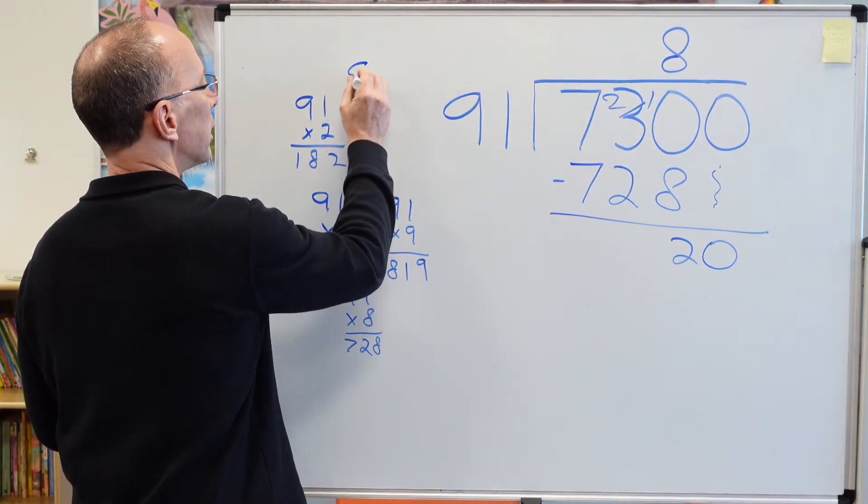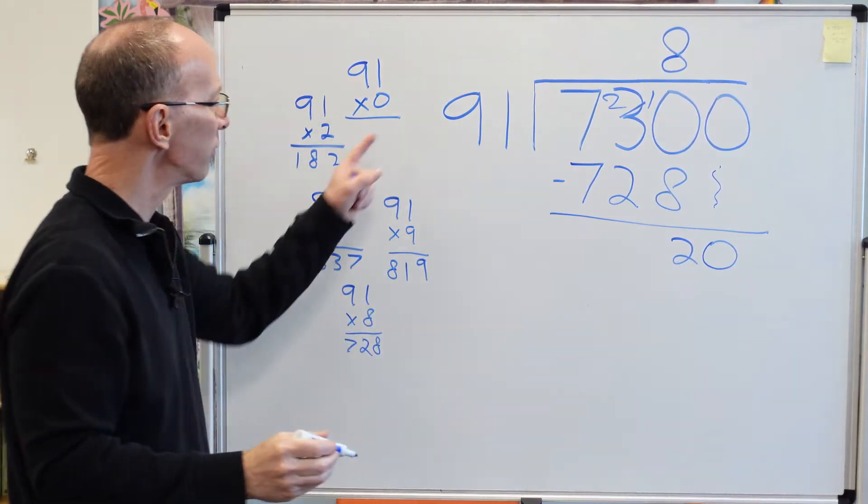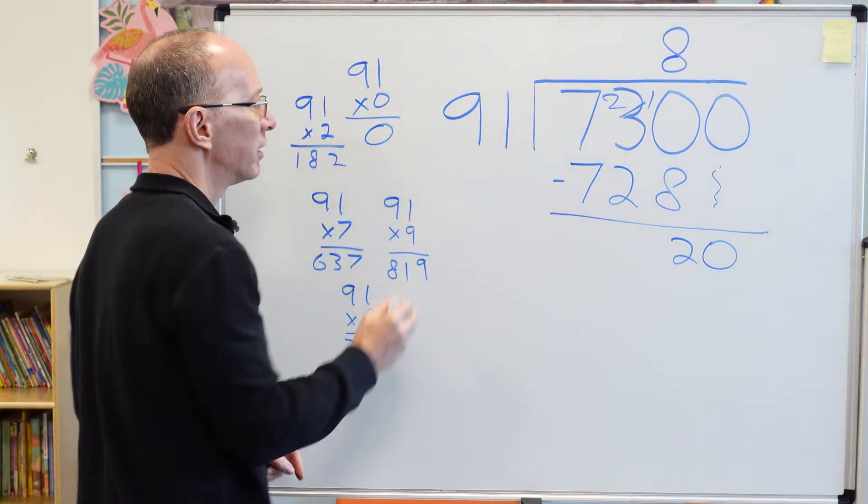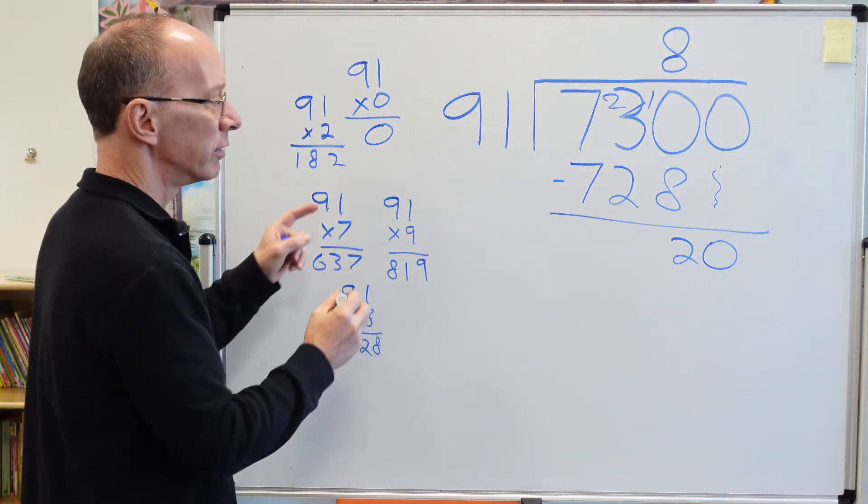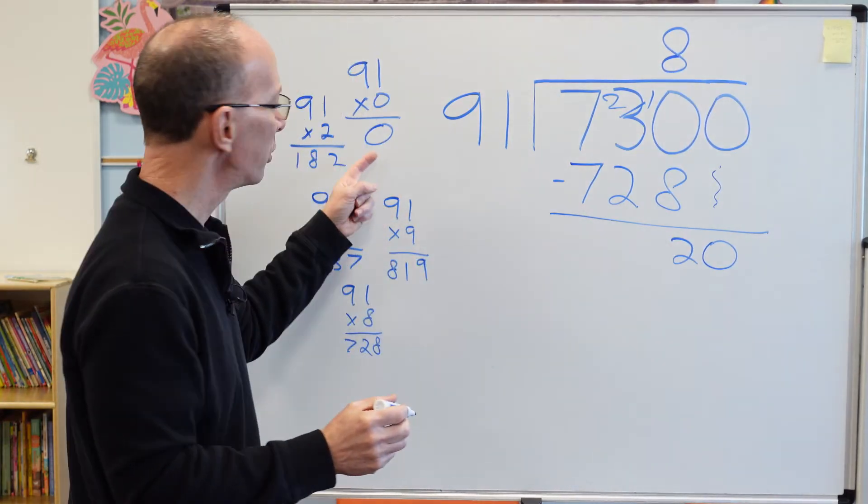That is the number or the digit 0. Don't forget that this is a digit right here. So 91 times 0 is 0. We can't go 91 times 1 because 91 is bigger than 20. So I put in 0.